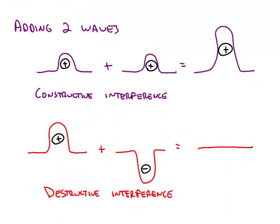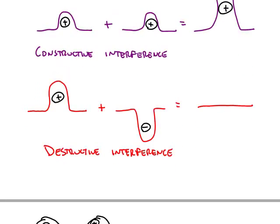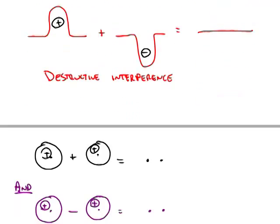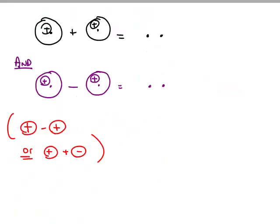If we put one wave with a positive amplitude and add another wave with a positive amplitude, they cause constructive interference and give us a bigger wave with positive amplitude. We can also add waves in a destructive interference way, where positive overlaps negative and they cancel each other out.